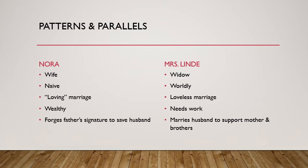Some striking parallels between characters: Nora is a wife; Mrs. Linda is a widow. Nora appears rather naive, while Mrs. Linda seems much more worldly, knowing how things work. Nora is in what appears to be a loving marriage, while Mrs. Linda was in a loveless, convenient one. Nora is wealthy — or soon to be, with Helmer becoming bank manager — while Mrs. Linda has been financially struggling and needs work. Most strikingly, Nora forged her father's signature to save her husband, whereas Mrs. Linda married a man she didn't love to support her mother and brothers. These contrasts illuminate how they relate to and differ from each other.